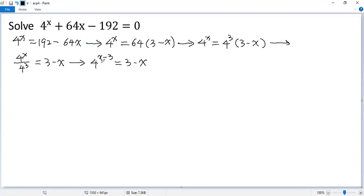Nice, because the exponent is the opposite of the right side. So if we let t equals the right side, 3 minus x, then the equation becomes 4 to the power of negative t equals t.